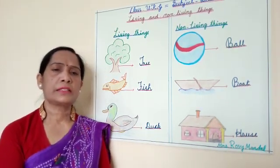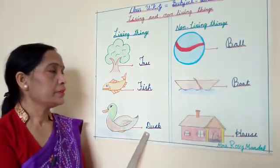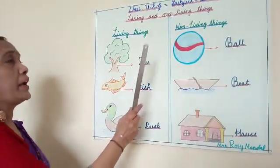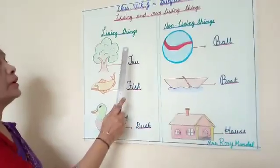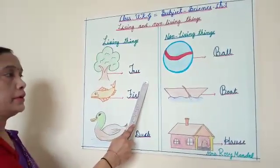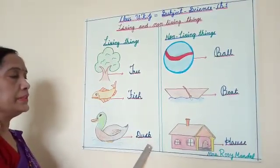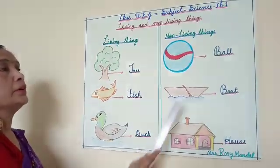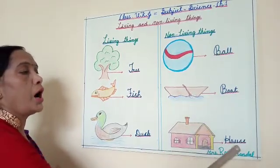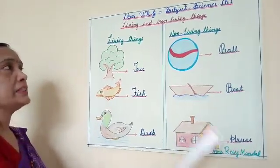And let's see the picture. Living and non-living things. Living things: tree, fish, dog. Non-living things: ball, house.